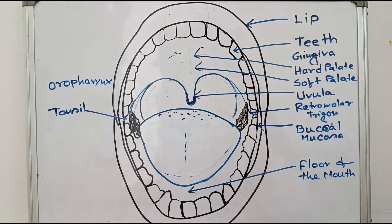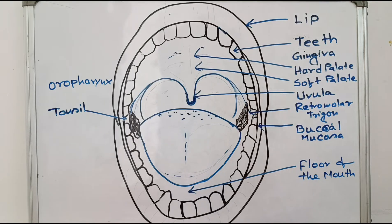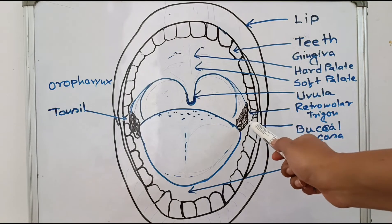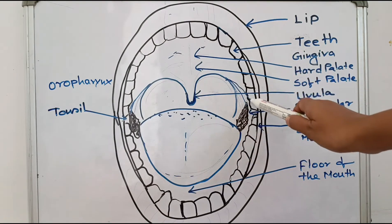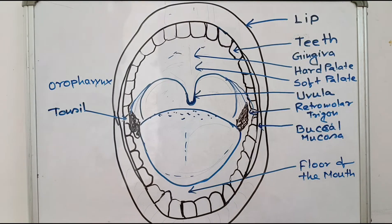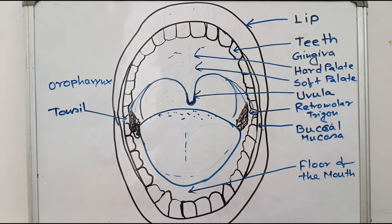Then we check the uvula, which is very important — it is a small portion just like a small tongue. If there is any deviation of the uvula, you have to identify it — it may indicate vagal nerve palsy or asymmetry. You can check the uvula easily. Then the retromolar trigon — this is the area at the back of the molar area where a trigon is present. You have to check this particular area as well.